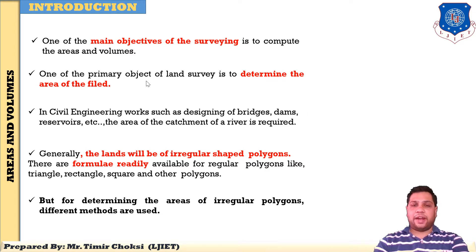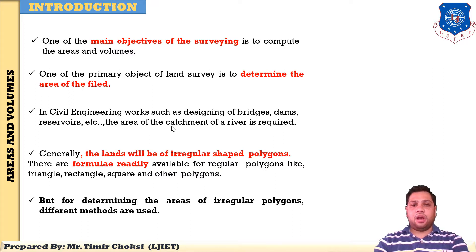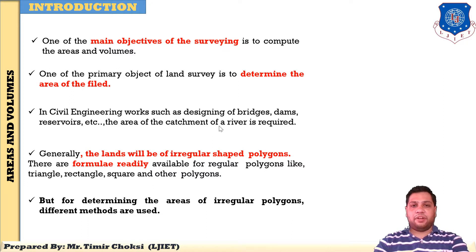For example, to find the capacity of water stored in a reservoir, or to construct a highway, you first need to find the area in order to understand the quantity of all materials required. In civil engineering work — design of bridges, dams, reservoirs — you need to find the area of the catchment of a river. So the primary object is to find the area as well as the volume.